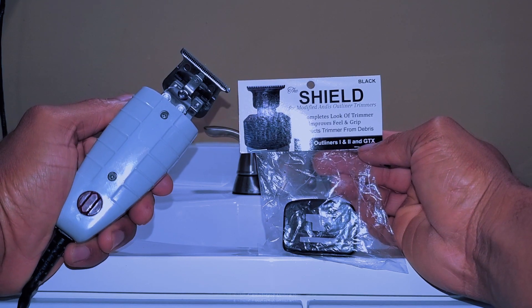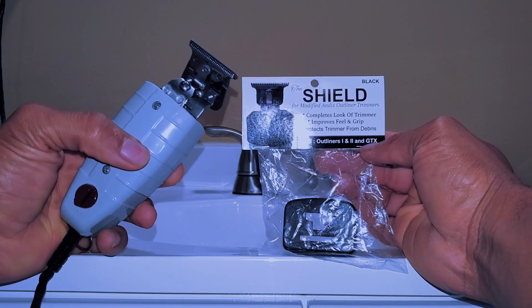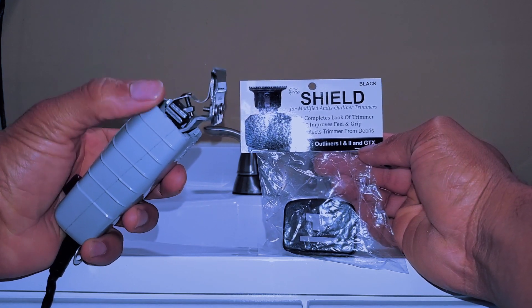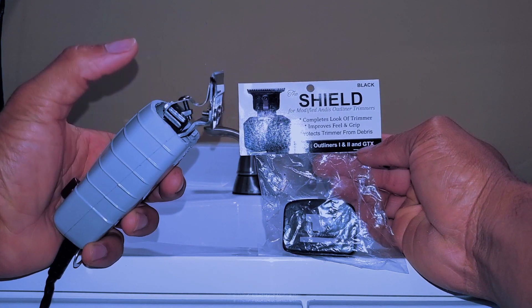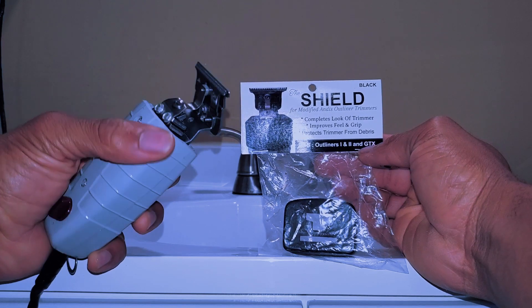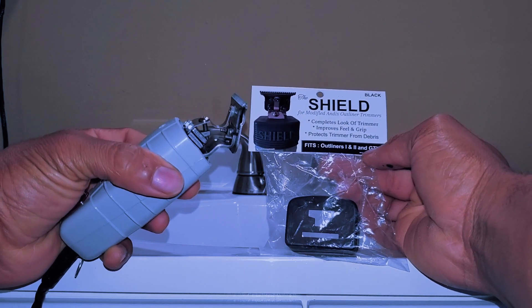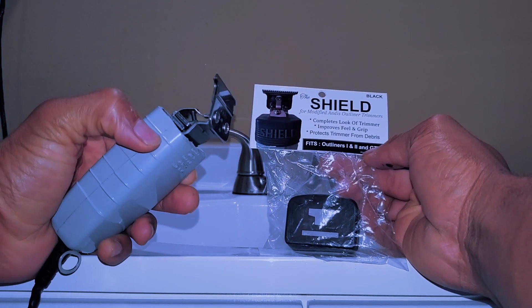I believe it's by Diamond Cuts. So this is for everybody that leaves comments on videos about the modified T-Outliners. You know, when you cut the trimmers and turn them into skeleton trimmers, this is for everybody that's always like, doesn't hair get in there? What happens when hair falls in there?